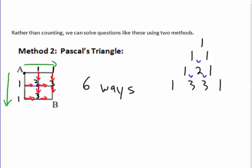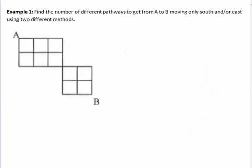The good thing about this counting method with Pascal's triangle is it always works. You can always use this method to count the number of pathways. So let's look at an example of a pathway problem that's a little more complex. Let's find the number of different paths to get from A to B, only moving south and east using two different methods.